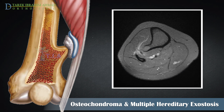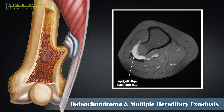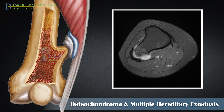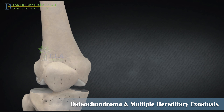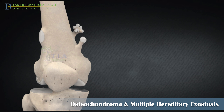The cartilage cap is thick in the child, narrows during adolescence, and generally is less than one centimeter in the adult. Hereditary multiple exostosis are characterized by two or more exostosis in the appendicular and axial skeleton.